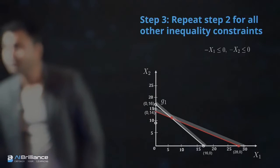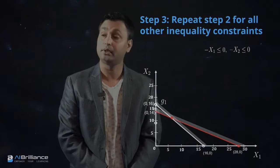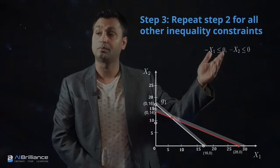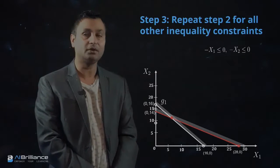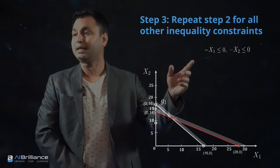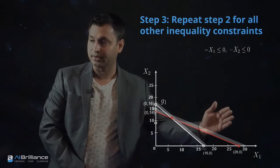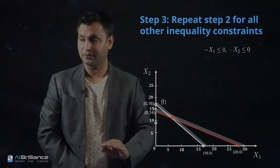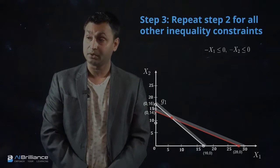We also have two additional constraints: X1 ≥ 0 and X2 ≥ 0, written in standard form as -X1 ≤ 0 and -X2 ≤ 0. This is because problems are typically written in standard negative-null form. X1 ≥ 0 means the X1 value must lie on the positive side of the axis, and X2 ≥ 0 means X2 must lie above the horizontal axis.